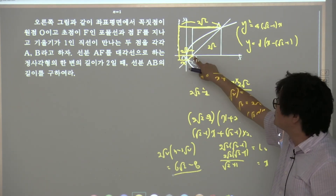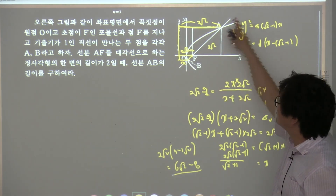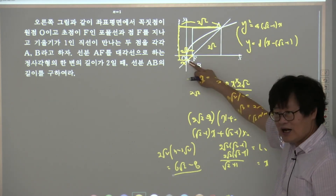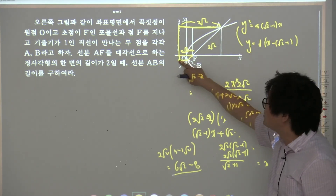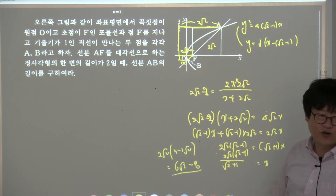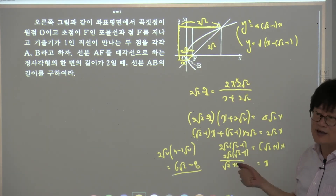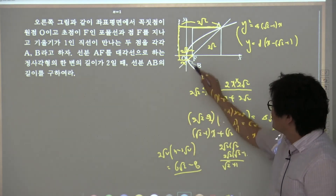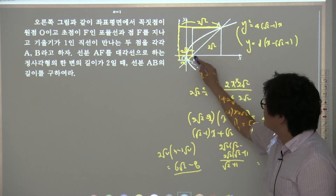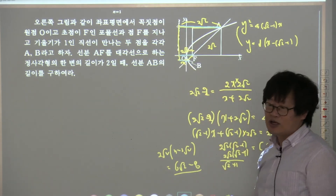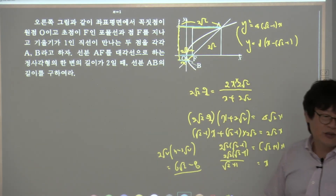초점을 확실하게 구하자는 거야. 그다음에 이 초점, 이 점의 좌표를 구하려고 이 직선과 포물선이 만나는 점을 구하든지, 아니면 조화중항을 이용해서 하든지. 그 연습용으로 조화중항 쓰라고 한 번 낸 거야. 초점을 지나면 항상 조화수열을 이룬다라는 게 연중에 좀 알고 있으면 좋겠다.